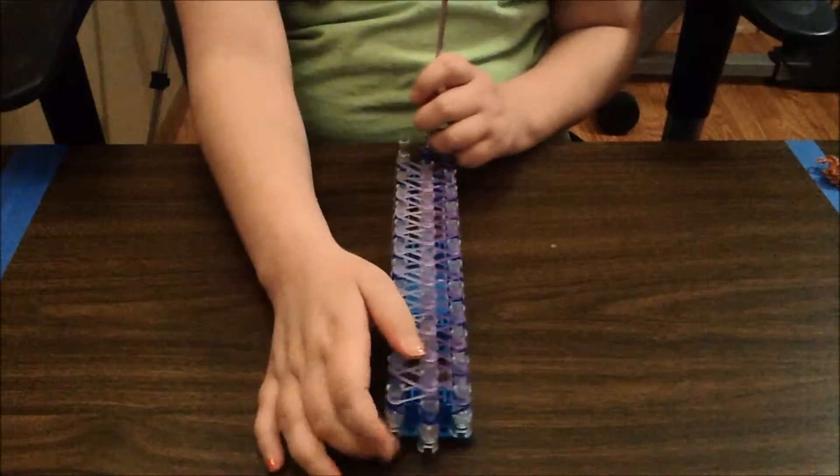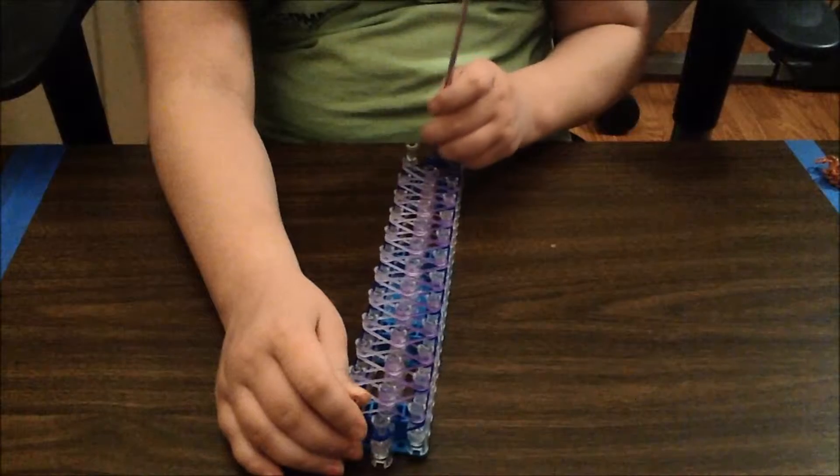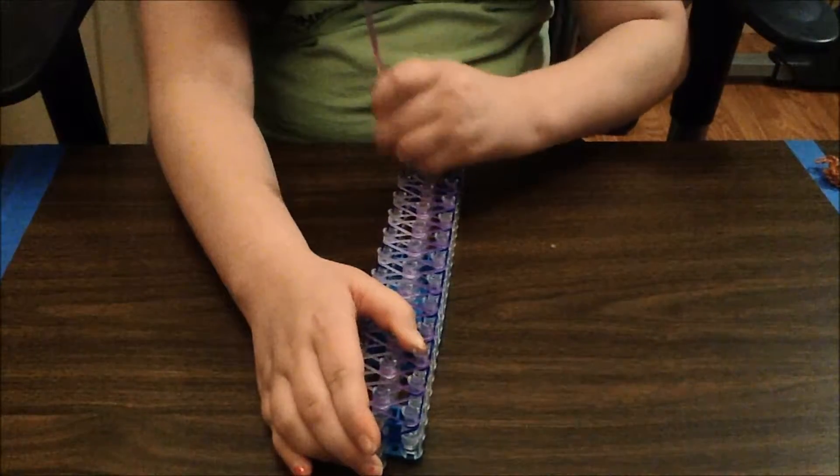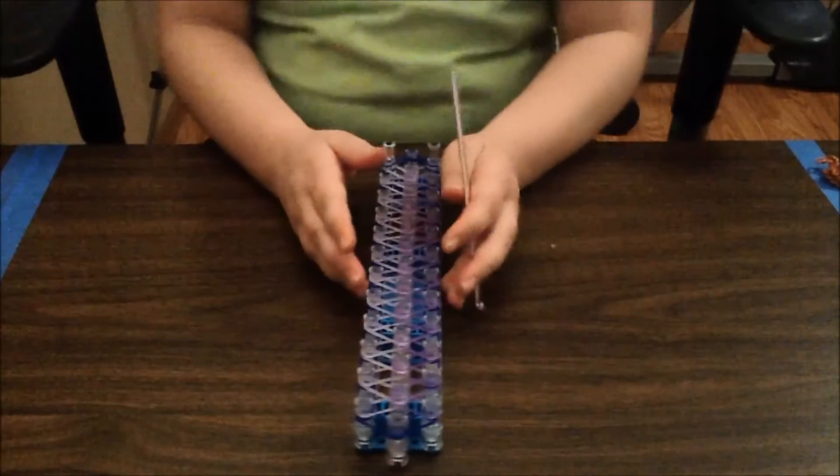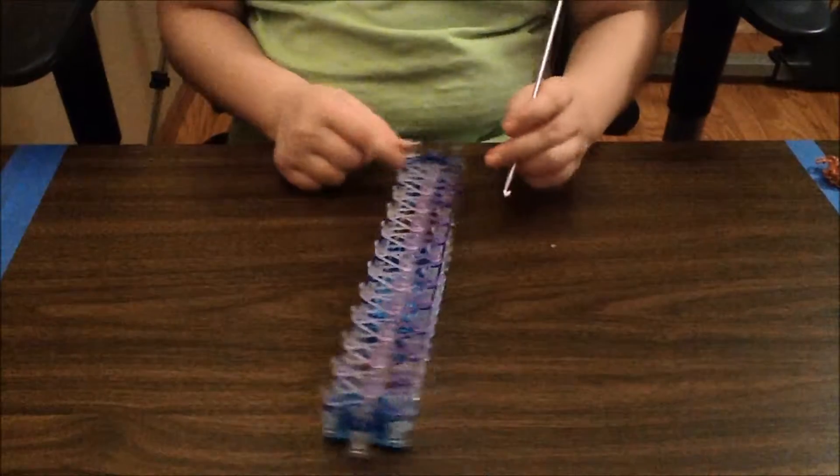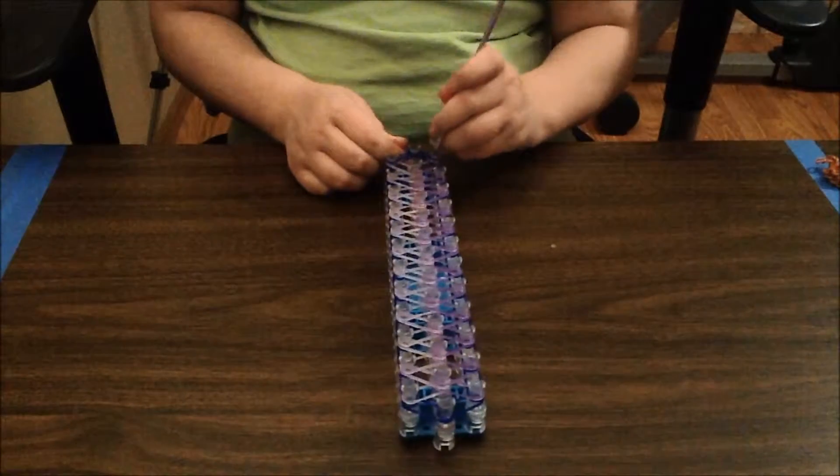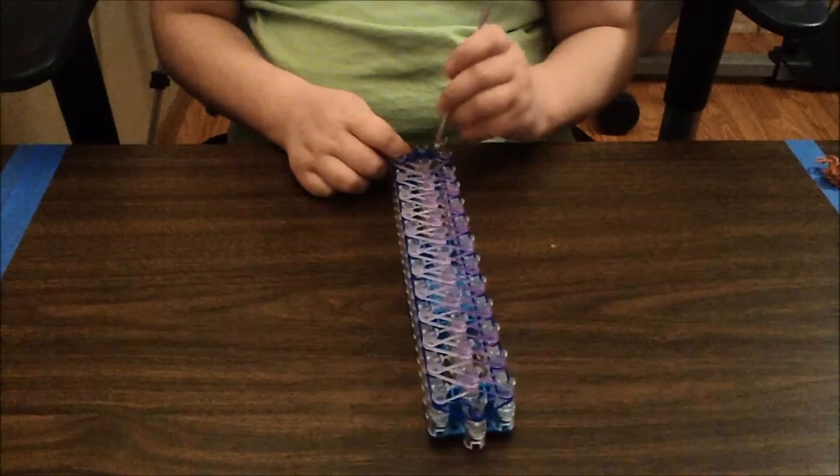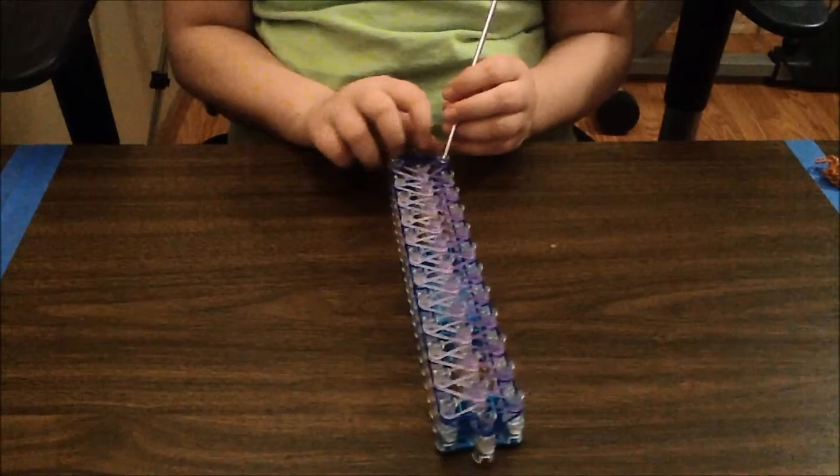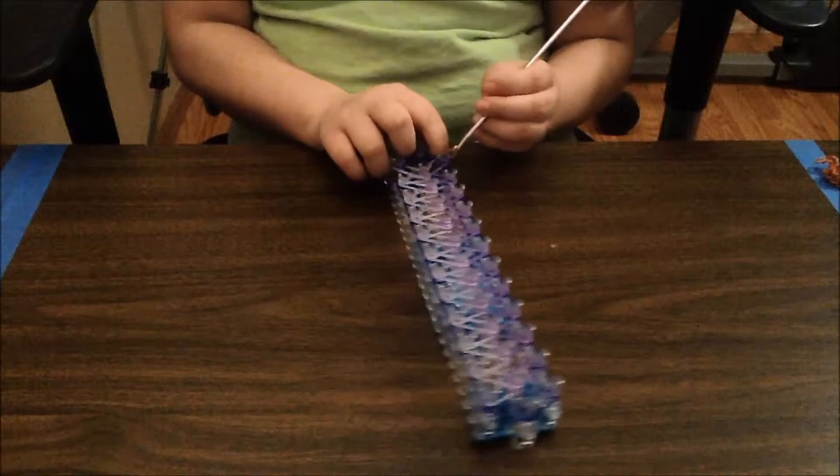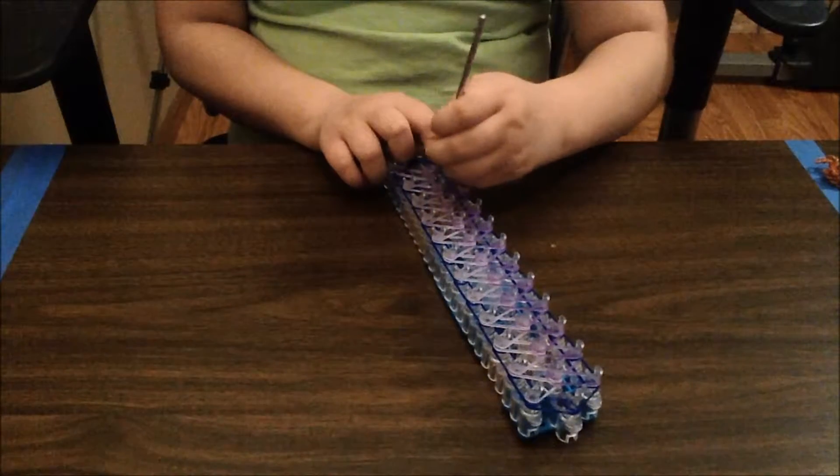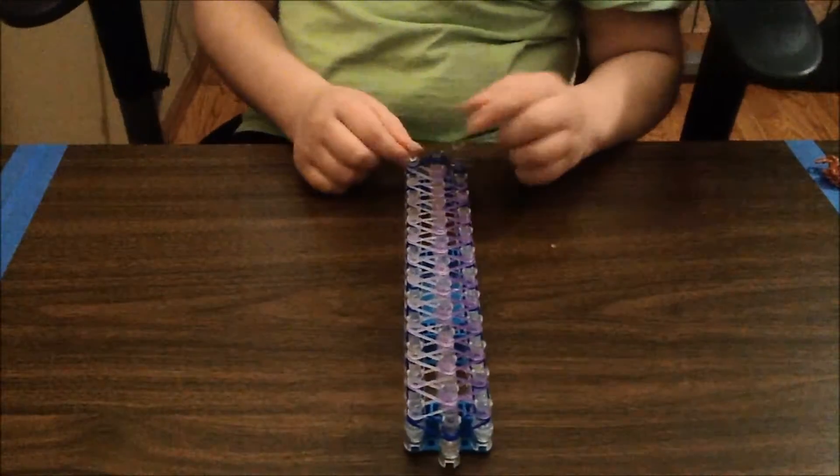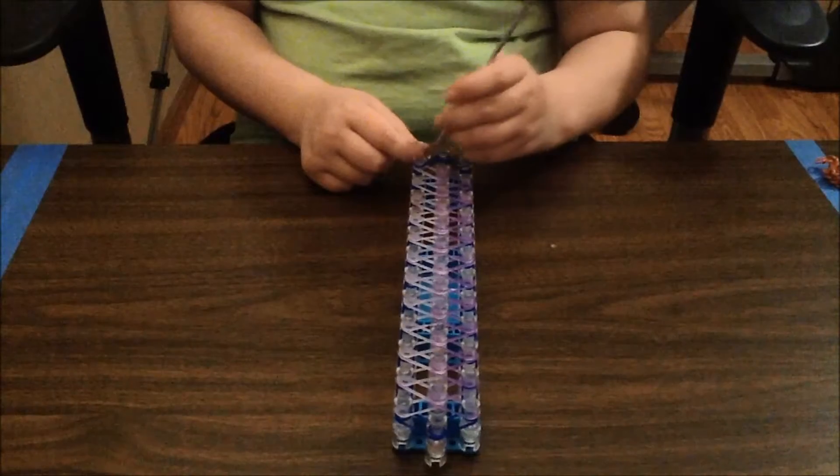Okay, so once you have done that, you're going to want to loop the right side. Now once you have finished that, you are going to want to loop this purple band. Well in my case it's purple but your color might be different which is totally fine. So you're going to want to go this way and hook that to the very center pin. And now you're going to want to loop it and repeat that process on the other side.